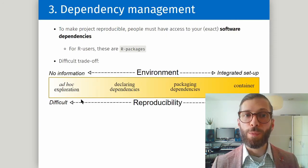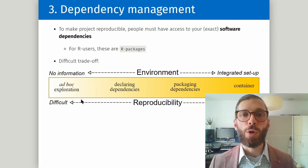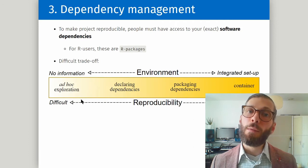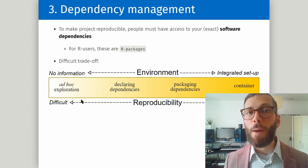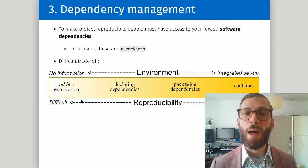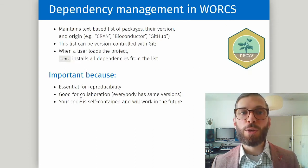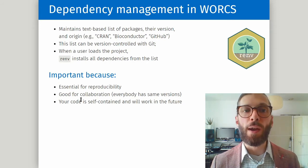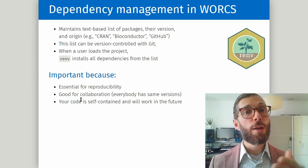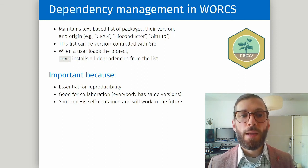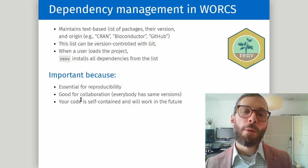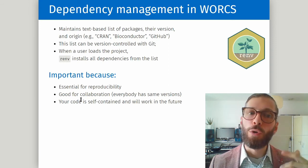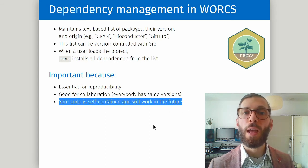The final tool is dependency management. To make a project reproducible it is not enough to just share your code — people must have access to the exact same software that you used, and for our users these are your R packages. WORKS maintains a text-based list of all of your packages, their version number and where they came from. This list is version controlled with Git, and when another user loads your project all of the packages are installed from that list. This is essential for reproducibility and good for collaboration — everybody will have the same version, so there are no mysterious errors. Moreover, your code will be self-contained and will work in the future.